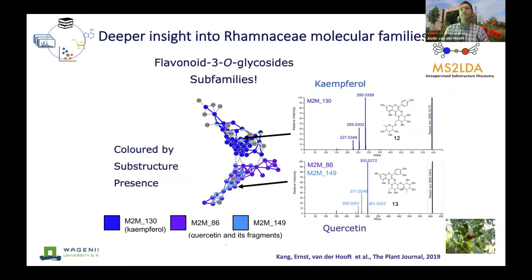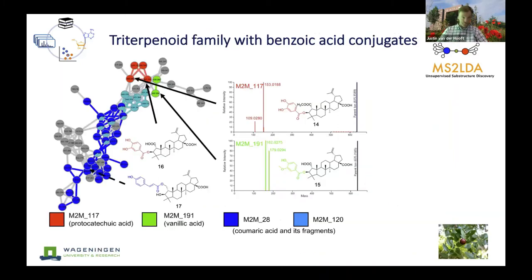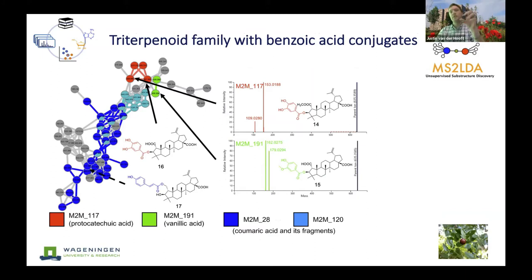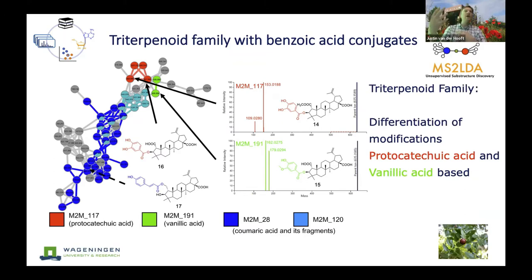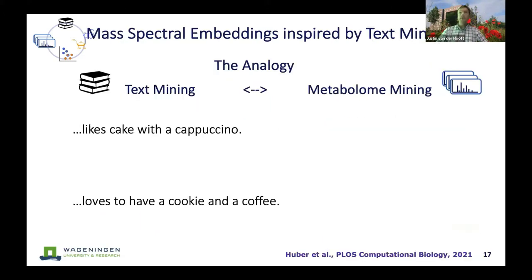It turns out there is one subfamily based on kaempferol and one based on the flavone core — two often occurring flavonoids in plant material. Another example from the triterpenoids: they are often conjugated in plants, and here we can recognize proto-catechuic acid, phenolic acid, and chlorogenic acid as conjugation agents for these different triterpenoids. Bringing it together helps you more quickly identify the relevant or interesting parts, even across a family.